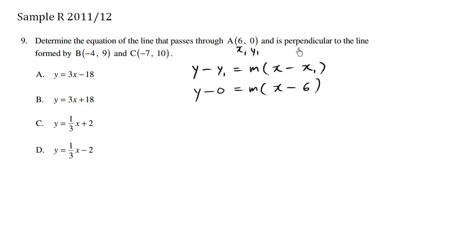Let's solve for m. Now what's tricky here is that we're using the word perpendicular. So let's solve the slope of these two points here first. Let's take a little pause from this question and focus on finding the slope of BC.